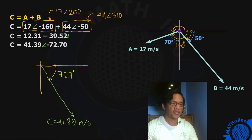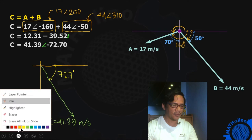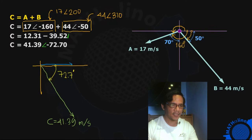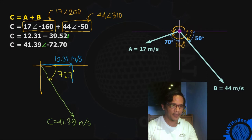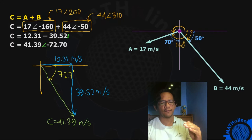What are these two quantities — 12.31 and 39.52? We have 12.31 to the right, and negative 39.52 meaning downward. These are the components of our vector C. So to the right, this is 12.31 meters per second, and downward — indicated by the negative sign — this is 39.52 meters per second. The resultant of these two vectors A and B is therefore 41.39 meters per second in the direction of 72.7 degrees downward to the left.